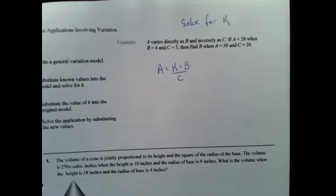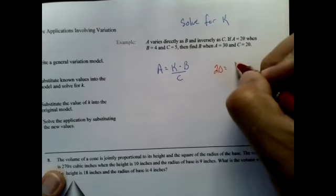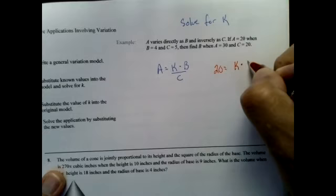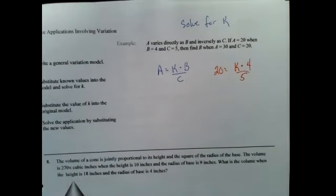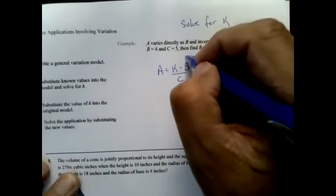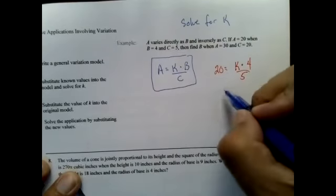So now I'm given a situation where I say if a is 20 when b is 4 and c is 5. So I'm setting up my model, and what I'm actually doing right now is I'm going to solve for k. So the first thing is I set up my equation. Second thing I want to do is solve for k.